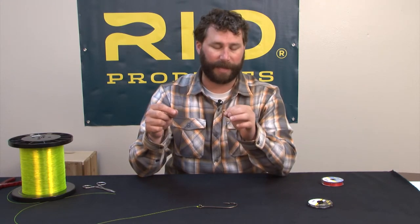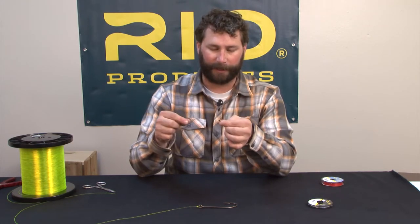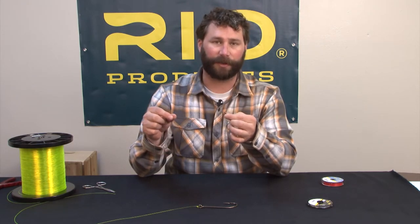Like I said, that locked tag end will prevent it from slipping out. It's a great versatile knot for a wide range of fishing situations. That's the improved clinch.